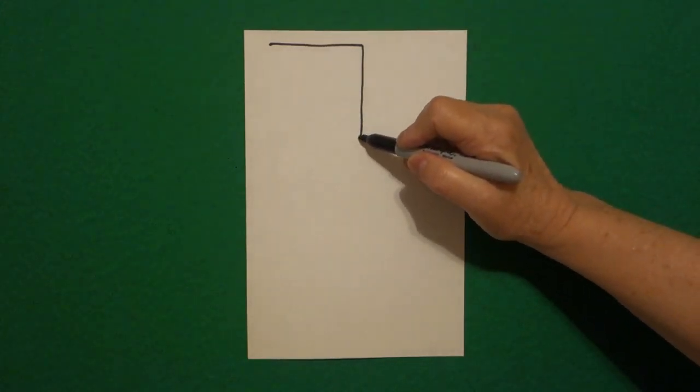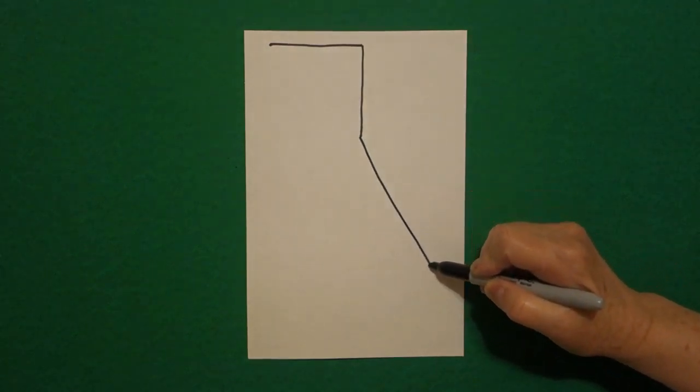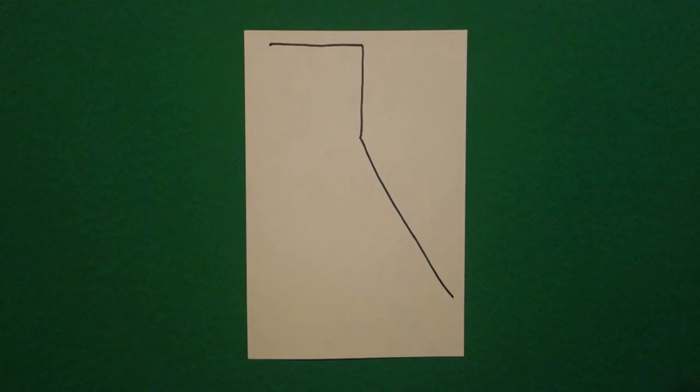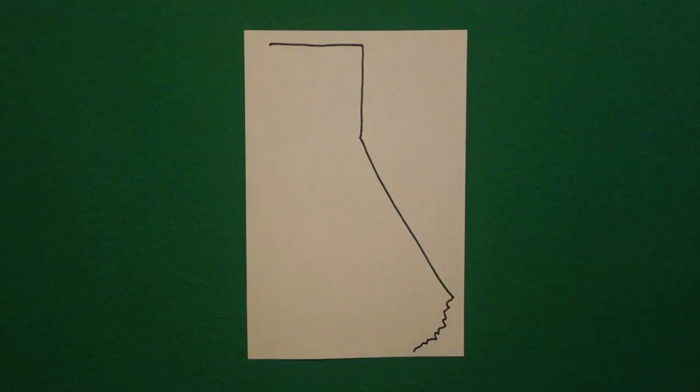And right where I stop, I draw a straight diagonal all the way down to almost the edge of the page, and stop. And right here, I'm just going to draw a zigzag, wavy line, zigzag, wavy line, wavy line, and stop.